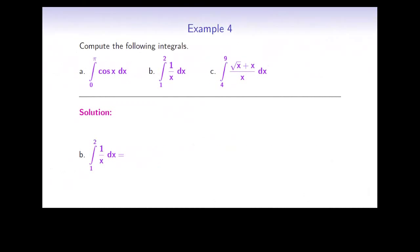In part b, we need to find the integral of 1/x on the interval from 1 to 2. An antiderivative for 1/x is ln|x|, and so by the fundamental theorem we evaluate ln|x| at the two endpoints and compute the difference. We get ln 2 minus ln 1, and since ln 1 equals 0, the final answer is ln 2.